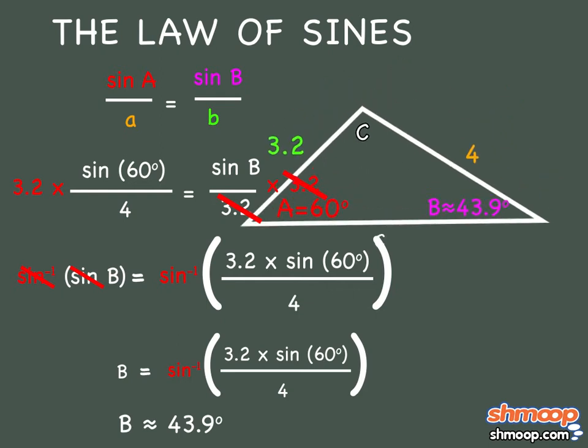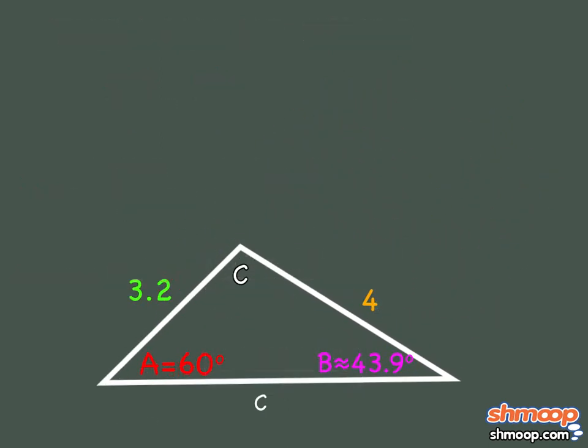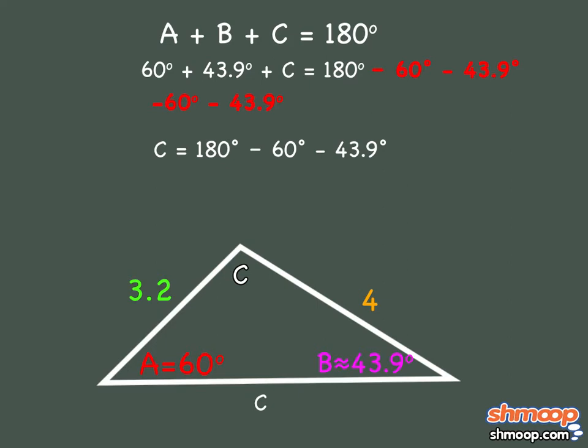Now we have 2 out of 3 angles and 2 out of 3 sides. Knowing that all the angles in a triangle add to 180 degrees allows us to find the last angle. Substitute in the angles we know, A as 60 degrees and B as 43.9 degrees. To solve for C, we can subtract 60 and 43.9 from both sides to get C equals 180 degrees minus 60 degrees minus 43.9 degrees to get that C equals 76.1 degrees.